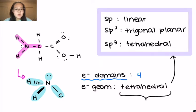Now that we know that our electron geometry is tetrahedral, we can see that this correlates to a hybridization of sp3. So that is the hybridization of the nitrogen atom.